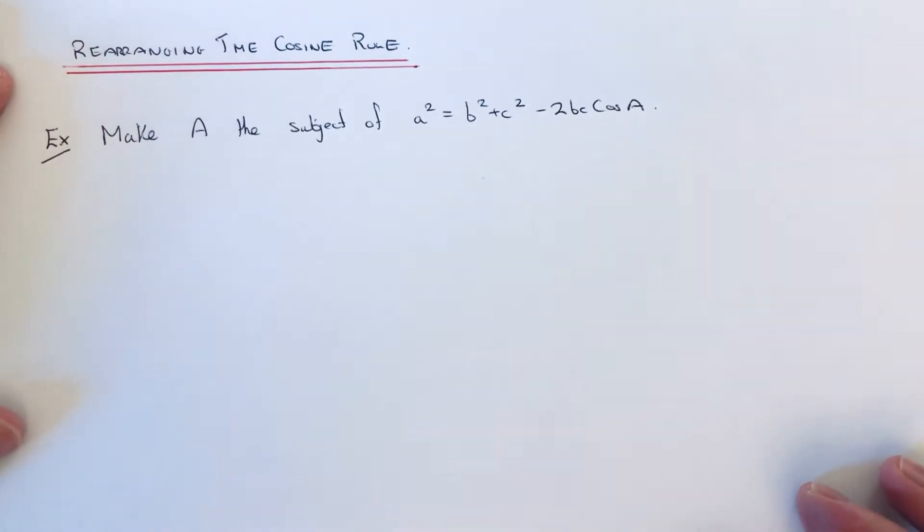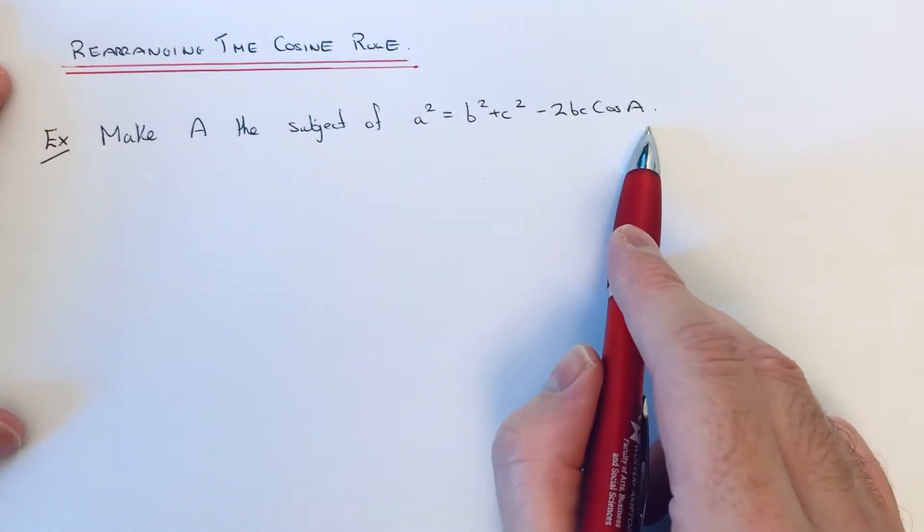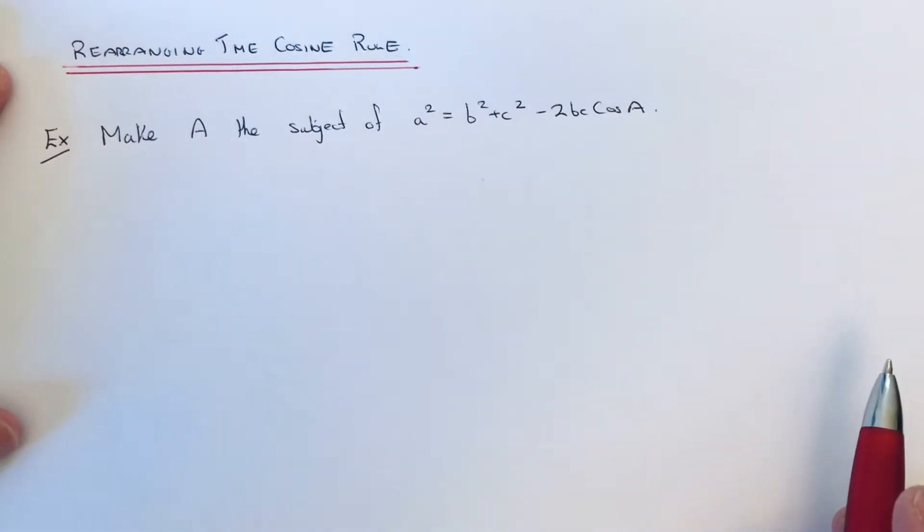Hi guys, welcome back. Today I'm going to show you how to rearrange a squared equals b squared plus c squared minus 2bc cos A to make A the subject of the formula, which is useful when you need to work out the angle inside the triangle given all three sides.